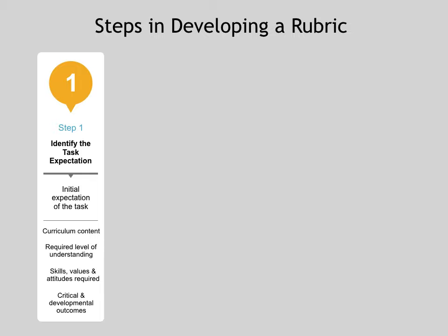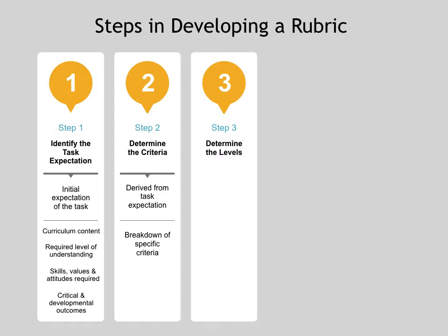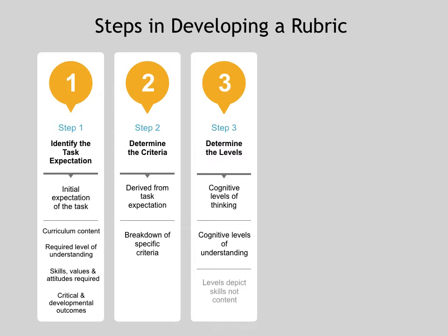Once we've identified the task expectation, the rest of the rubric follows. The next step is to determine the criteria, which comes from the task expectation. Once you've said what you want from the learners, you can break down the task expectation into specific criteria. After that, you need to determine the levels. The levels come from the level of cognition you require from the learners — cognition being about the processing, knowledge, and understanding learners have for a particular concept. You've got to make sure the levels depict skills and not content.